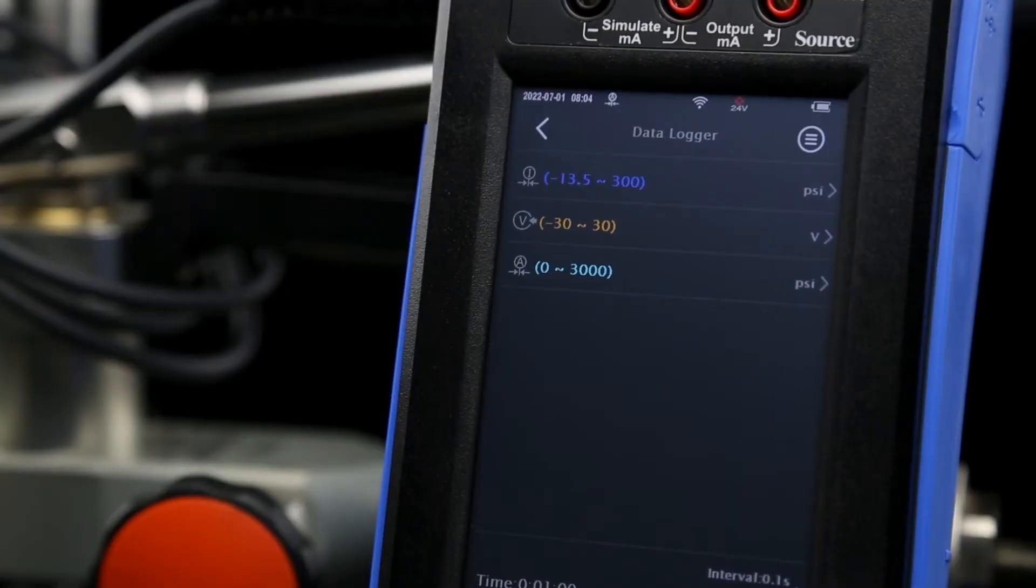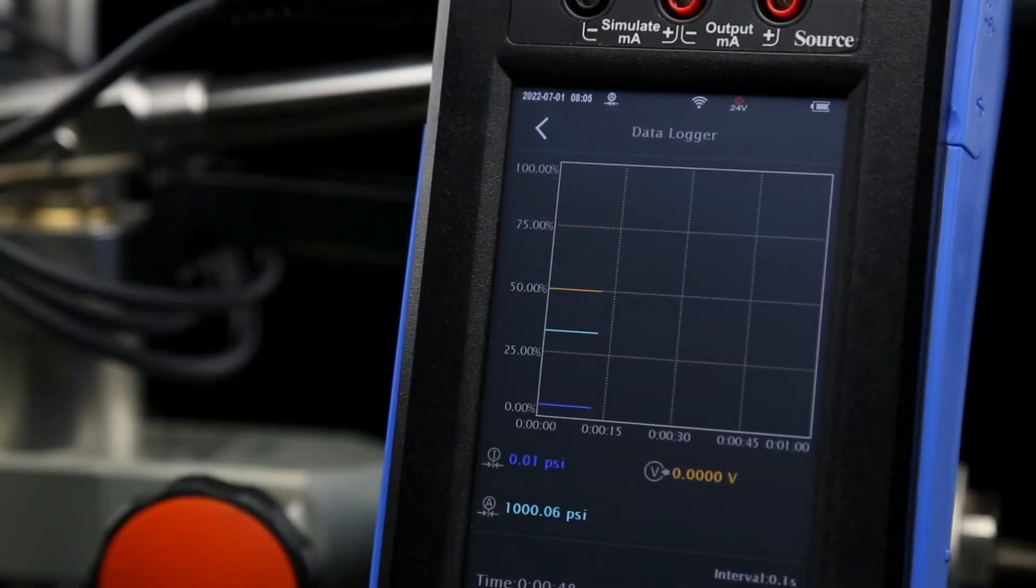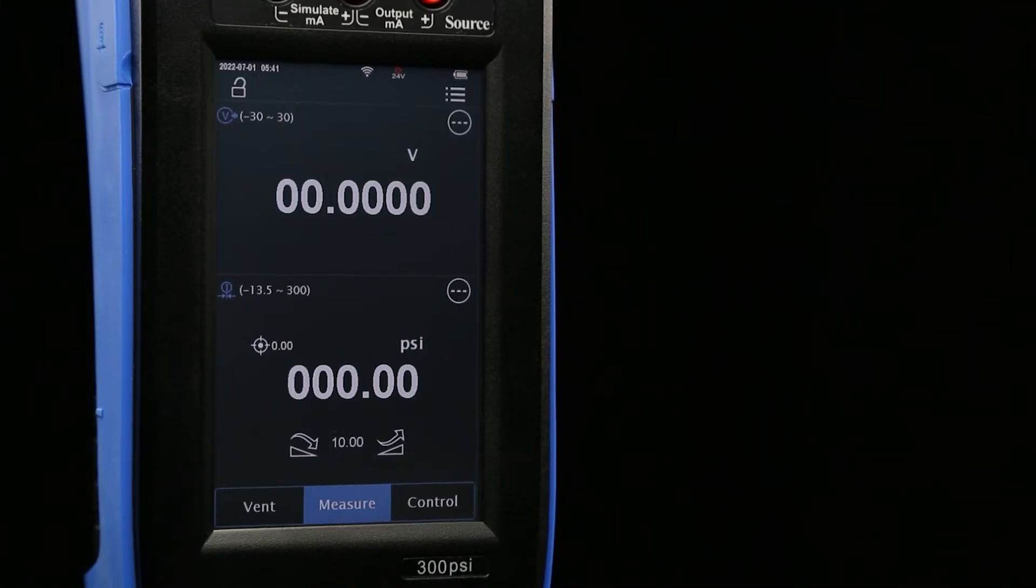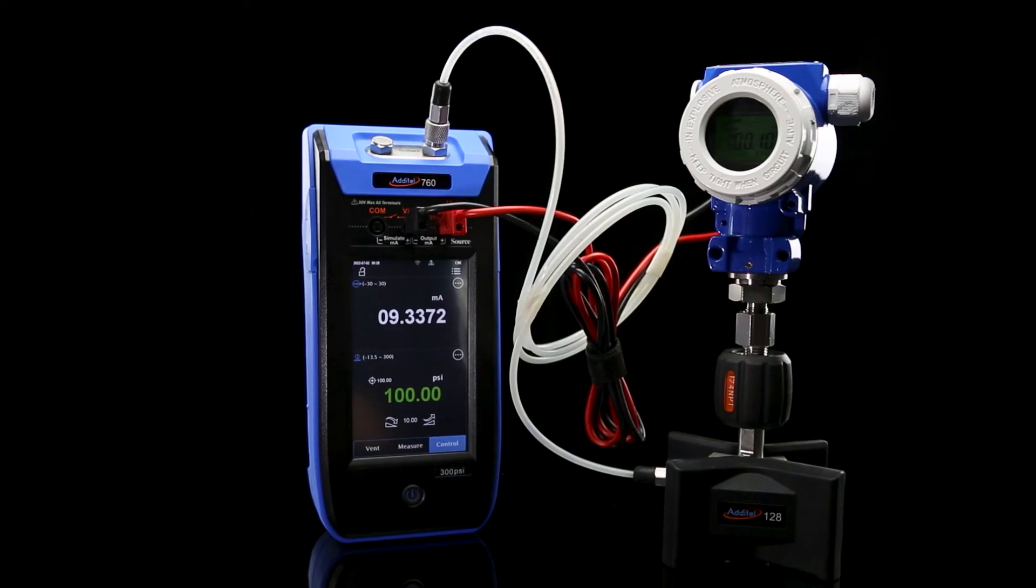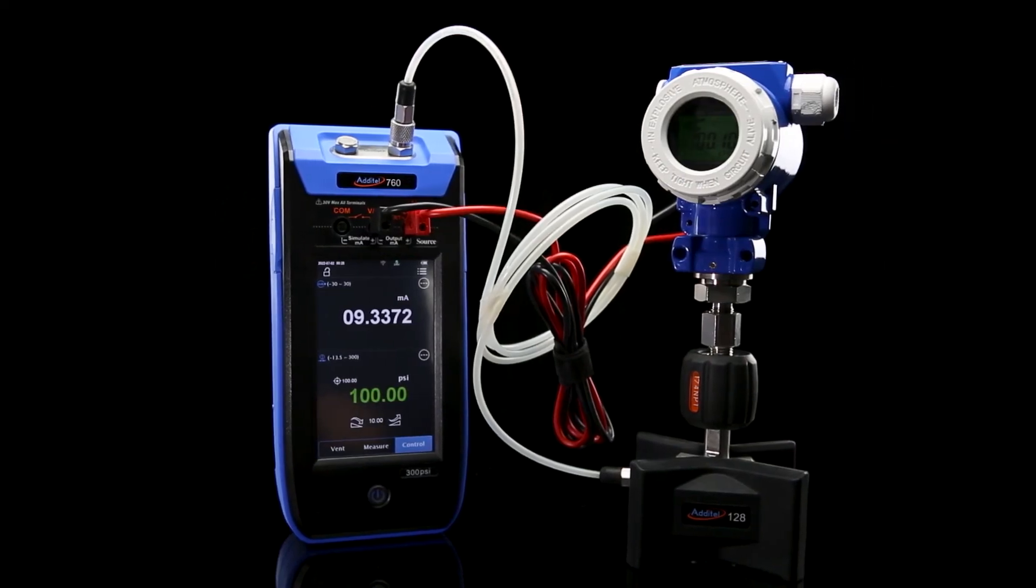Using the internal data logging feature, both inputs can be recorded simultaneously, along with the internally generated pressure and electrical channels. The 760 also features HART communications and a 24-volt power output for the quick calibration of transmitters and other compatible devices.